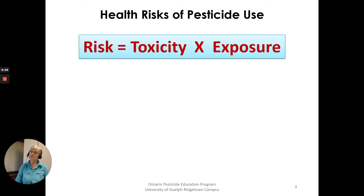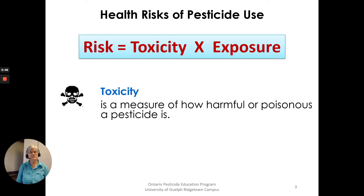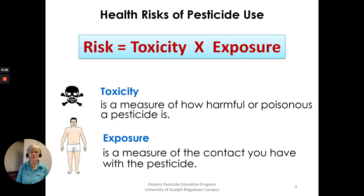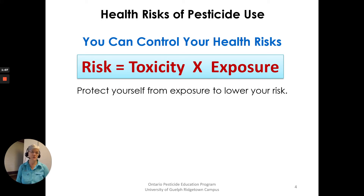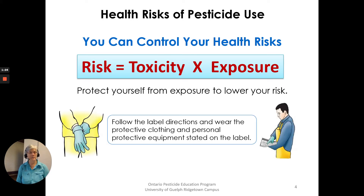With this equation — risk equals toxicity times exposure — toxicity is a measure of how harmful or poisonous the pesticide is, and exposure is a measure of the contact you have with the pesticide. You can control your health risks by minimizing this equation. Protecting yourself from exposure will lower your risk. You are dealt a certain toxicity when given the product, but you can lower your risk by lowering your exposure. Follow the label directions and wear protective clothing and personal protective equipment as stated on the label — that's your best protection.